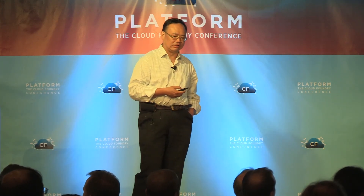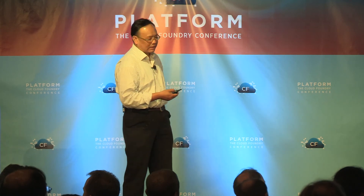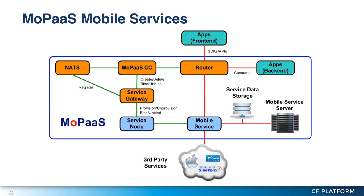This is how we integrate mobile services into Cloud Foundry. We use a gateway mechanism to extend services to include all services — either provided by ourselves via our mobile service server, or third-party services — to provide all the necessary features of a mobile backend as a service.